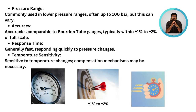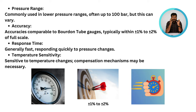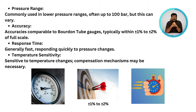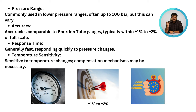This type of pressure gauge works fine often up to 100 bar, but it can vary. Accuracy is between plus or minus one percent to plus or minus two percent of full span.